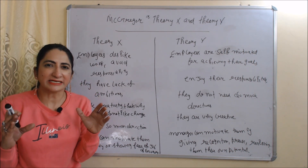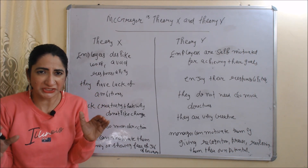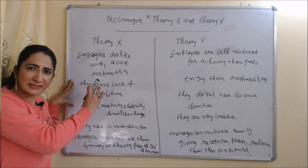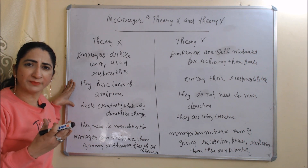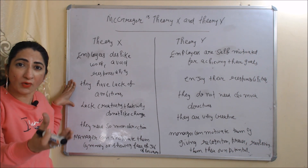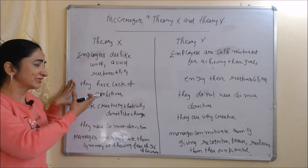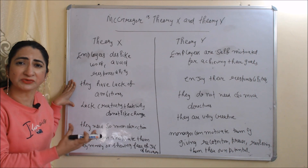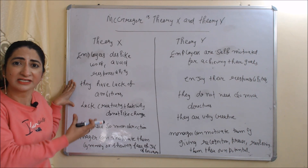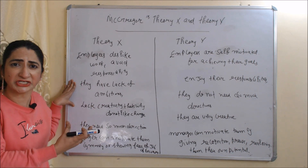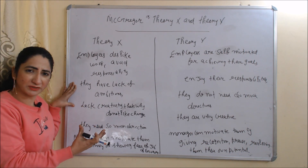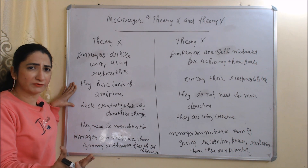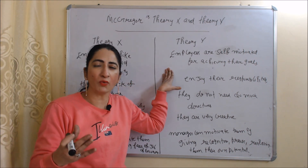Now we will see McGregor's Theory X and Y. According to Theory X, managers believe employees dislike work, avoid responsibility, lack ambition, lack creativity, dislike change, and need a lot of direction. According to Theory X, managers can motivate employees by giving them money or using fear of job security.